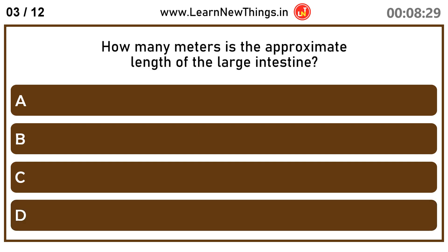How many meters is the approximate length of the large intestine? 1.5 meters.